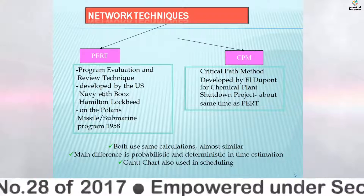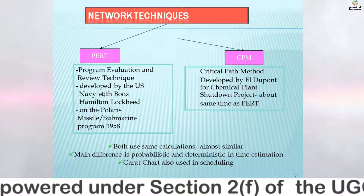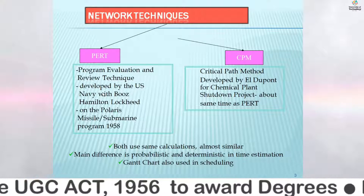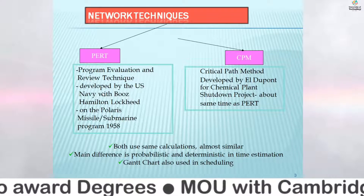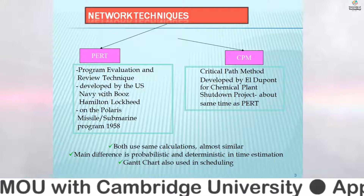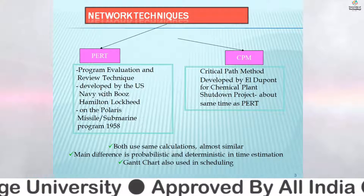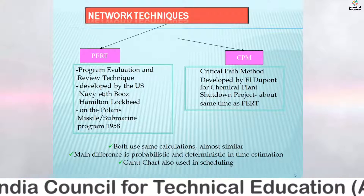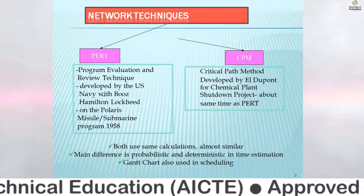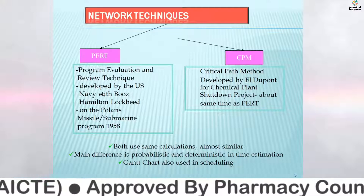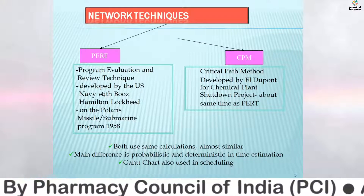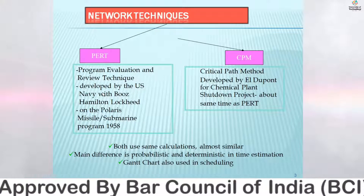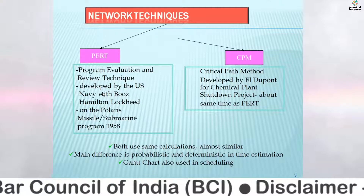There are two network techniques through which we can solve network problems. The first is PERT — Program Evaluation and Review Technique — developed by the U.S. Navy with Booz Technology. The second is CPM — Critical Path Method — developed by DuPont for chemical plant projects. Both techniques are used depending on whether the situations or activities are uncertain, or whether the time duration for activities is known or not.